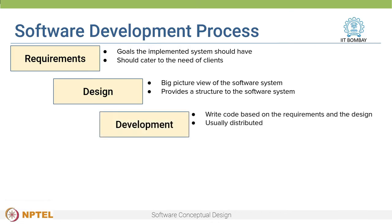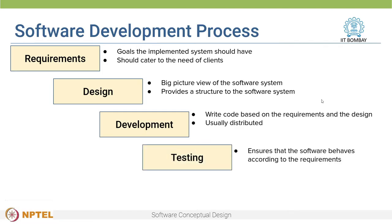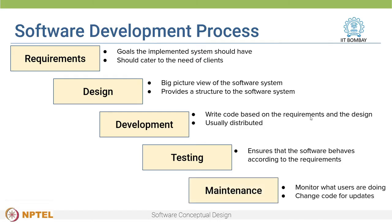Once the design is ready, we then write code in the development phase. After we have written code, we rigorously test our system to ensure that it behaves according to the requirements. We then release the software to the clients, and in the maintenance phase, we monitor what the users are doing and change the code for updates and upgrades.